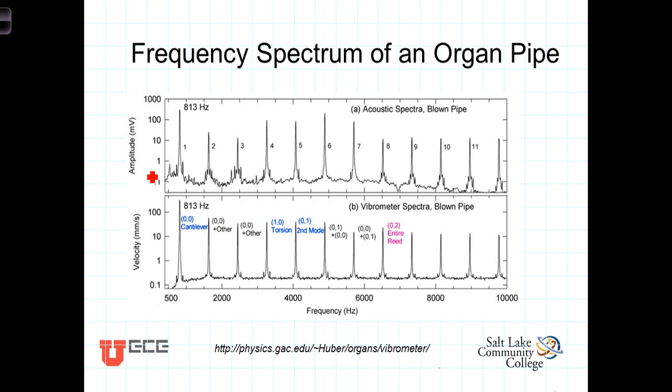But that it is a logarithmic scale. So the pipe organ, its natural or fundamental frequency is oscillating at 813 hertz, and it's up here around maybe 500, 600 millivolts. You have the second harmonic, which would be 2 times that frequency.